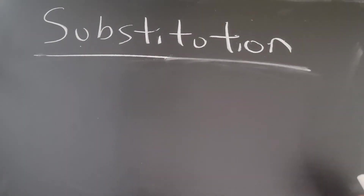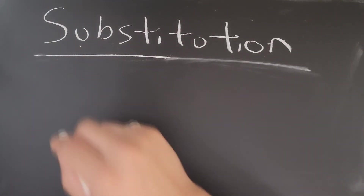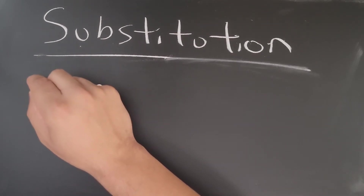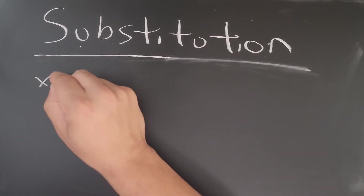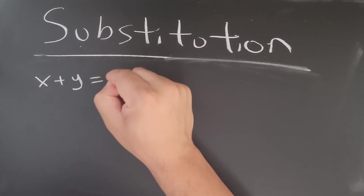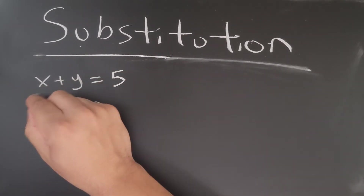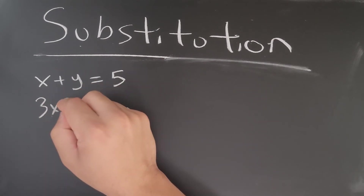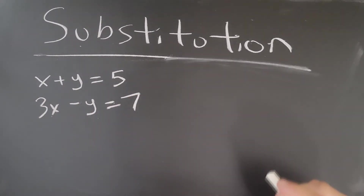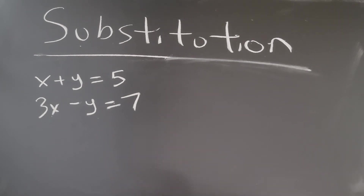Let's do another example. We have two equations: x plus y equals 5, and 3x minus y equals 7.